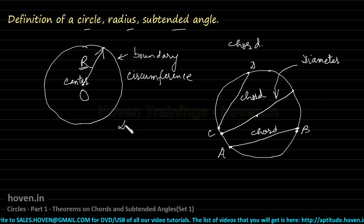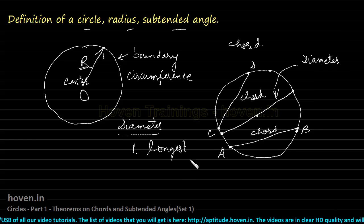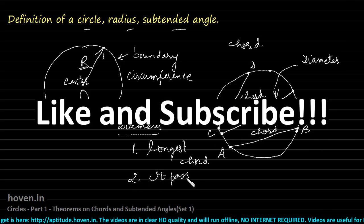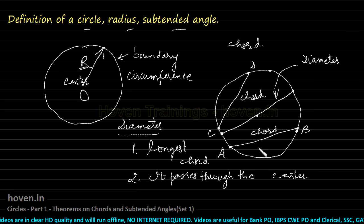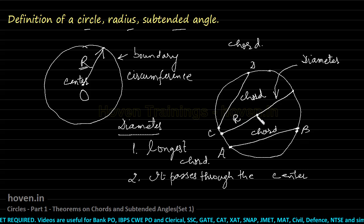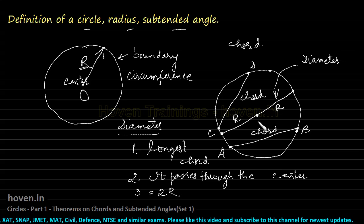If this is the center of the circle and we draw a chord that passes through the center, then this chord is called the diameter of this circle. So, diameter is the longest chord of a circle, and it passes through the center. Since the distance between the center and periphery equals the radius R on both sides, the diameter equals two times the radius.